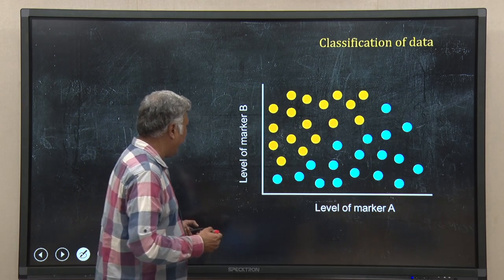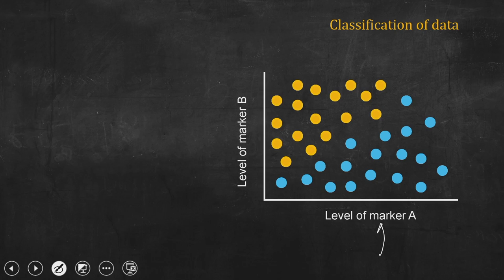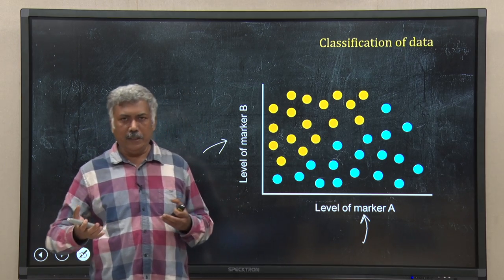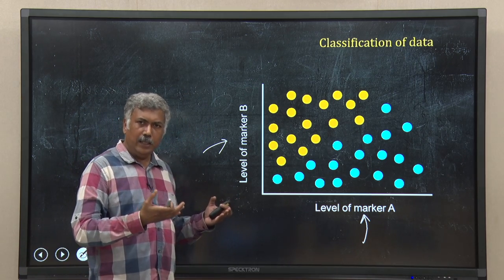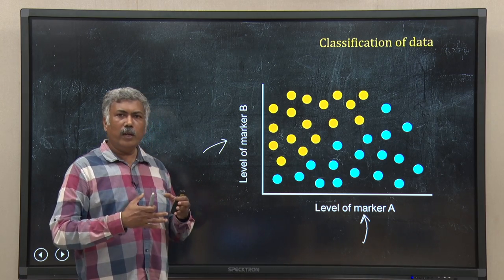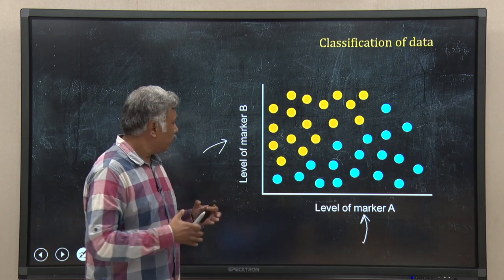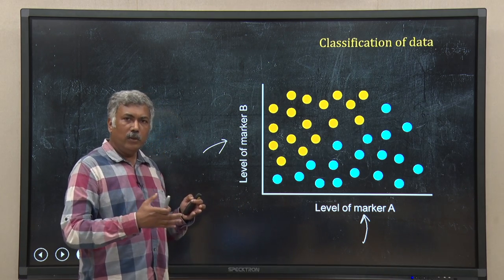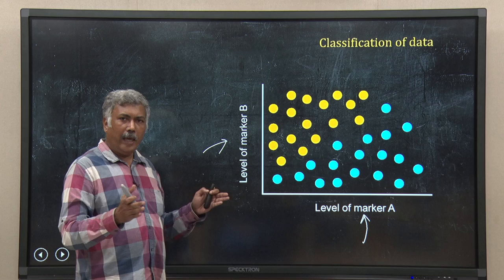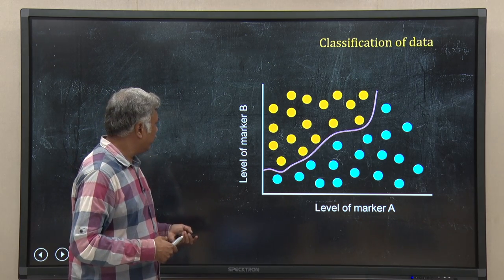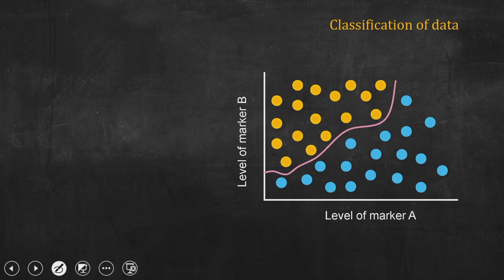It is not always a sigmoidal model — it can be more complicated. For example, suppose you have gene expression of two markers A and B and you want to classify a disease. You have higher-dimensional data and you also know the disease state of the samples. You create a model — something which divides the space — with disease on one side and no disease on the other — to classify new samples in the future.